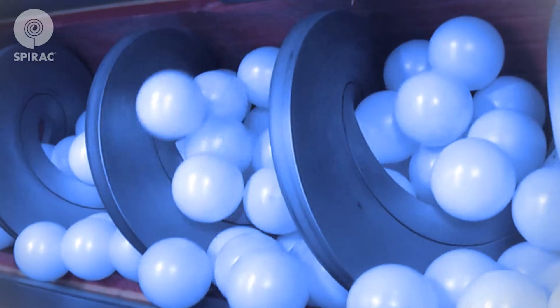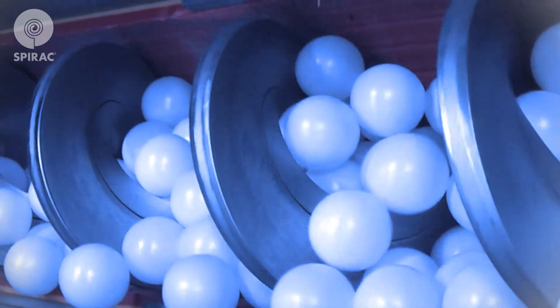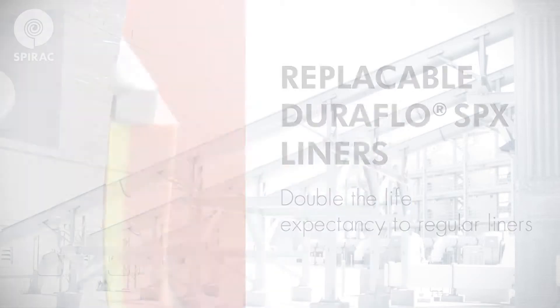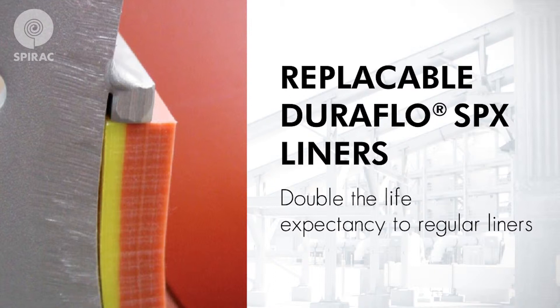Unlike conventional conveyors, SPIRAC shaftless conveyors do not use a central shaft, which means a much higher fill rate can be achieved. This also eliminates the need for end or hanger bearings as the spiral rides on a replaceable wear liner.